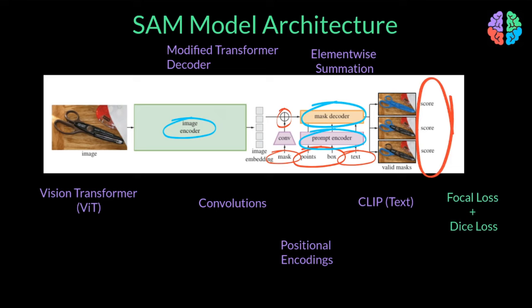To train the setup, they use a linear combination of focal loss and dice loss. You can notice that there are three scores rather than a single score for segmentation — that's to eliminate ambiguity. For example, if you clicked a single point on a scissors handle as a prompt, the model doesn't know if you wish to segment the entire scissors or just the handle. So it makes sense to train for three levels of granularity, giving three outputs unlike normal segmentation where we only have one output.